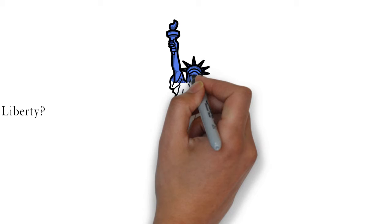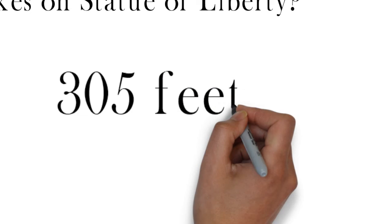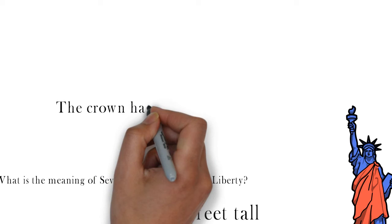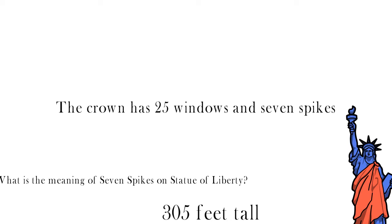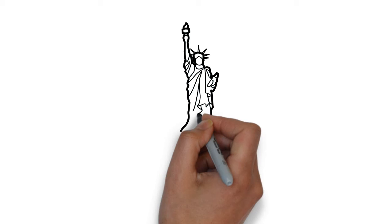The Statue of Liberty is 305 feet tall. The statue has 25 windows and seven spikes. According to the website of the National Park Service and the Statue of Liberty Club, the seven spikes of the Statue of Liberty represent something significant.